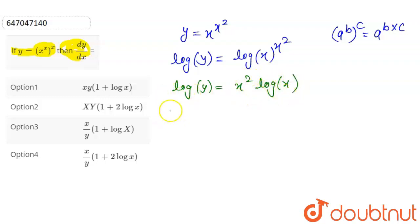Now we will do differentiation with respect to x. Log y is 1 upon y, times dy by dx equals u into v. First into second derivative, or first dropped down times second derivative, plus second dropped down log x times the derivative of x square which is 2x.